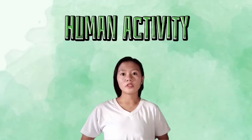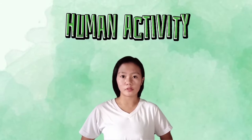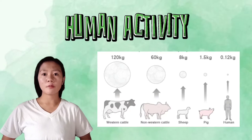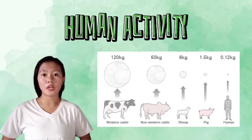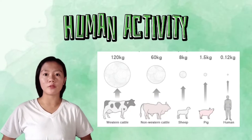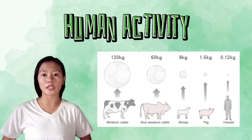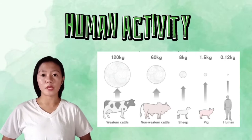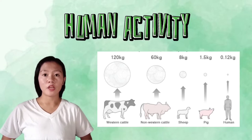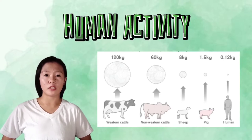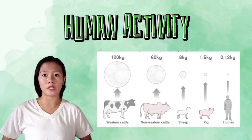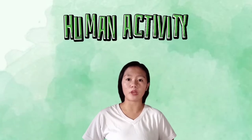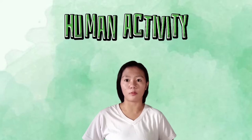The contribution of farm animals to global greenhouse gas emissions is quite significant. Methane emissions per animal per year: western cattle 120 kg, non-western cattle 60 kg, sheep 8 kg, pig 1.5 kg, human 0.12 kg, poultry 0.015 kg. In total, approximately 190 kg of methane is contributed, which adds to global warming.